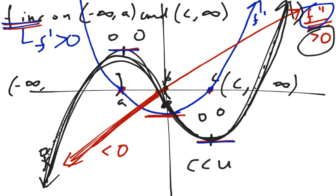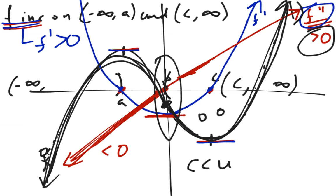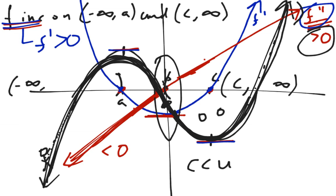Here at b is a very special point. Notice that f double prime is changing from negative values to positive values. That means f double prime is changing sign, which means it's an inflection point. An inflection point is where f double prime changes from positive to negative or negative to positive. On the graph of f, this means f is changing from being concave down — curving downwards — and starts being concave upward. That's the big picture relationship and the connection between f and f double prime.